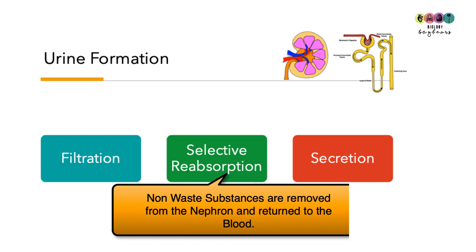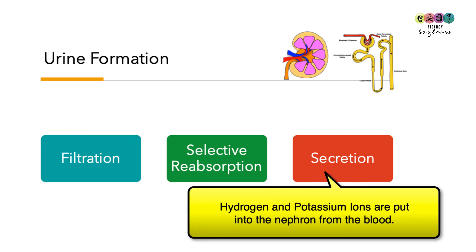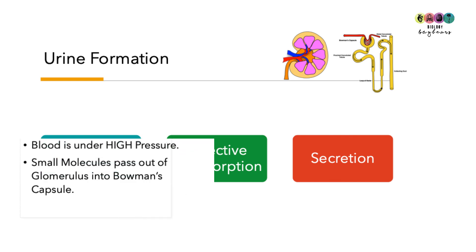The next stage is reabsorption, where all the useful material is taken out of the nephron and put back into the blood. Finally there is secretion, where certain ions — potassium and hydrogen ions — need to be moved from the blood into the nephron, i.e., secreted into the nephron.